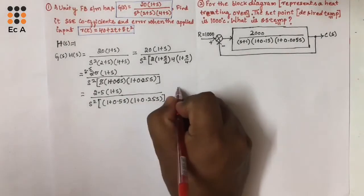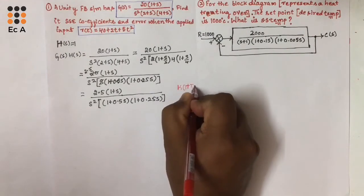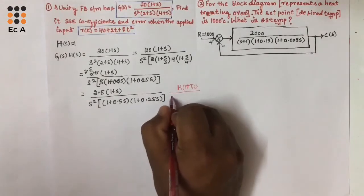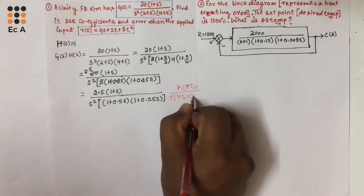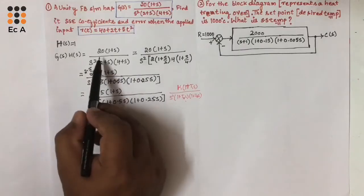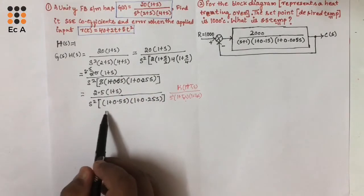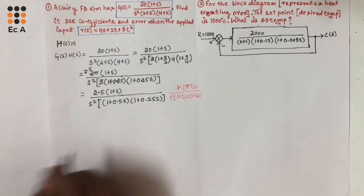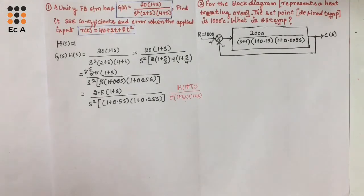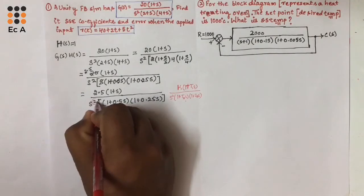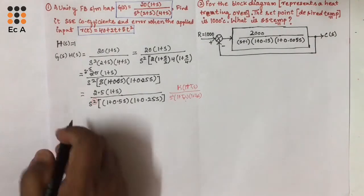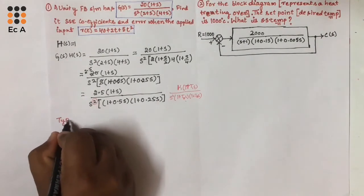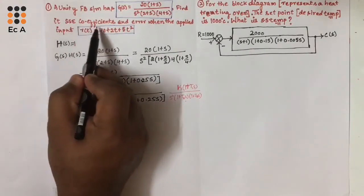If you compare this with the standard equation, it is similar to K times (1 plus T1·S) divided by S squared times (1 plus TA·S) times (1 plus TB·S). So we have converted this to a standard equation. From this equation, we can identify that the denominator contains S squared, which means J equals 2. So the given system is a type 2 system. Now let us find the steady state error coefficients.